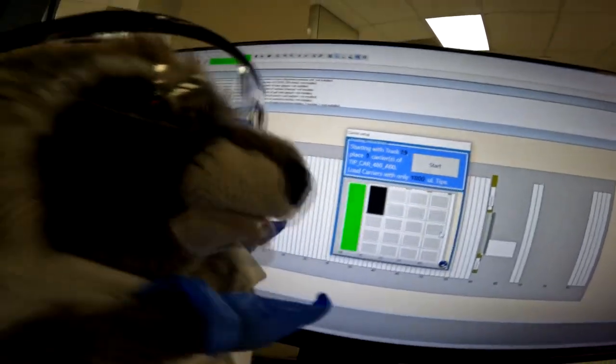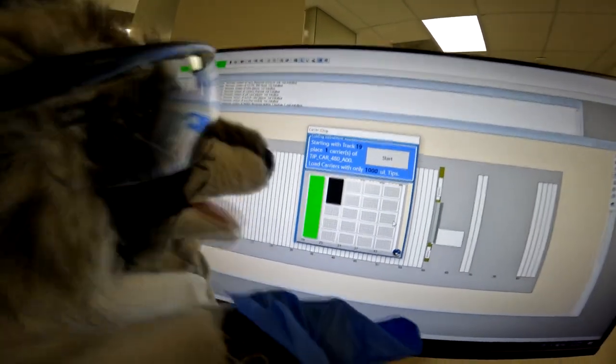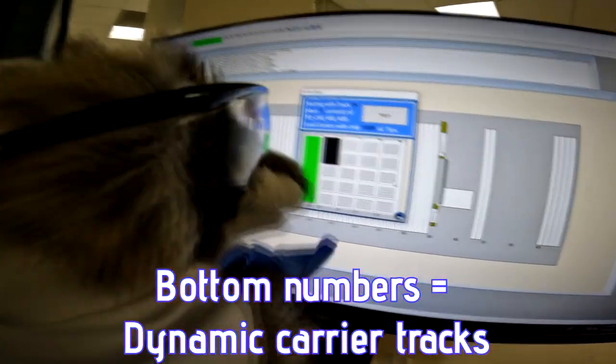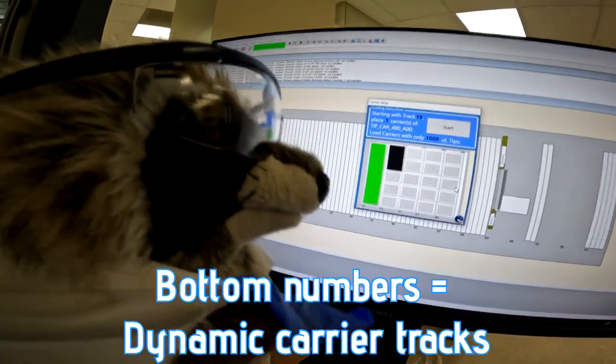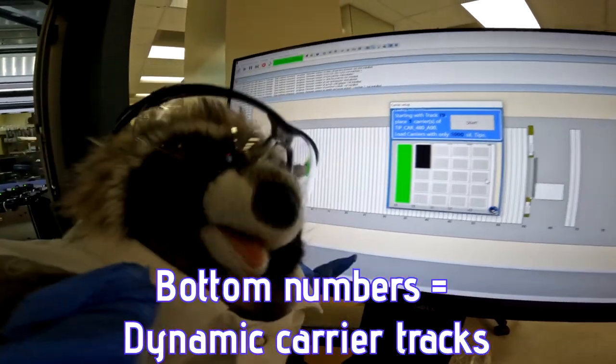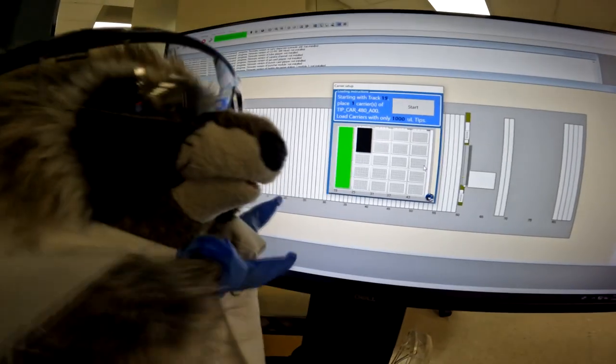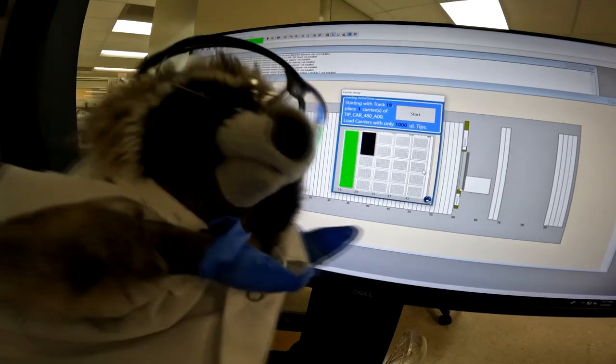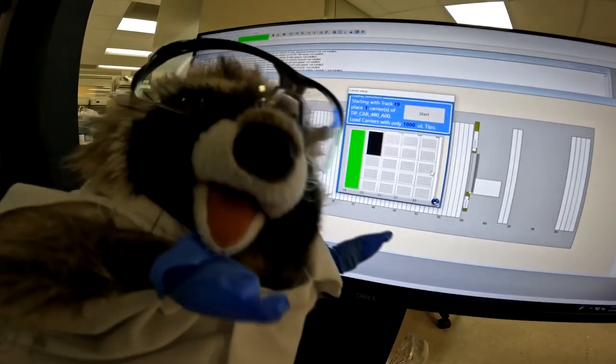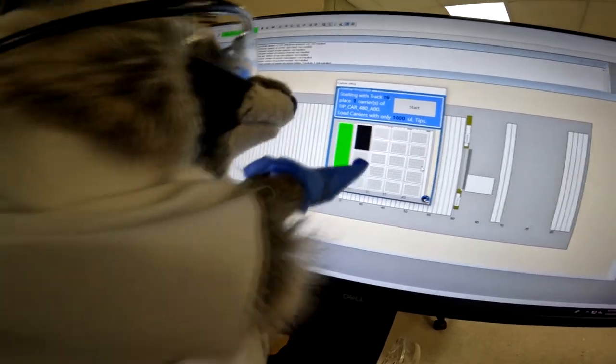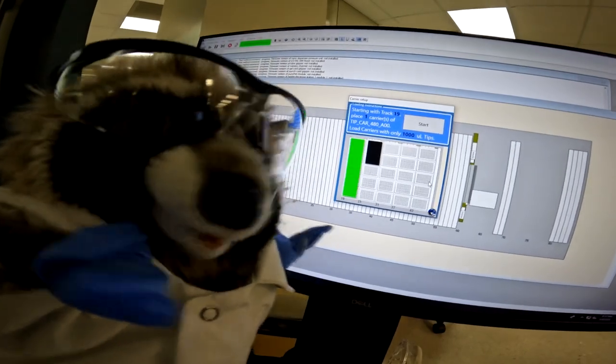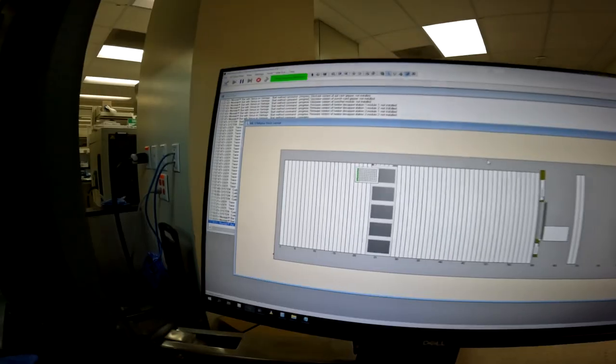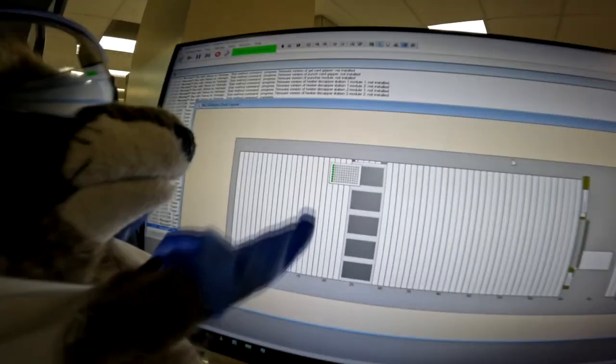So it tells you which track to start with, place one carrier there, and oh look, those numbers change in increments by six because that's the width of the track. Flashing which one you should load, and that black box - if we had to load two or more carriers, we would skip those positions. Only 1,000 tips, let's do it.